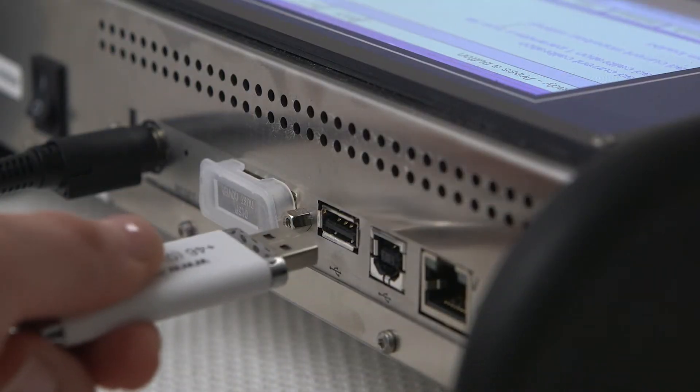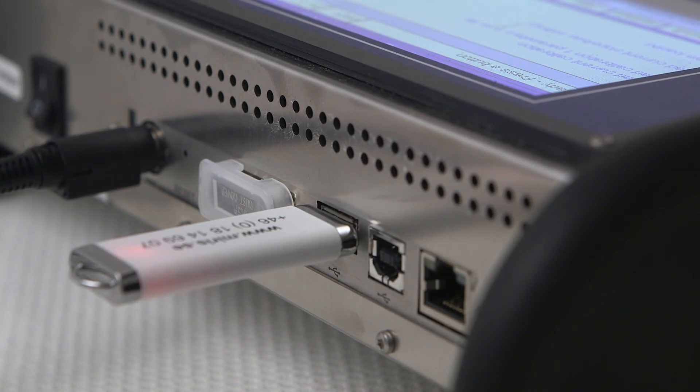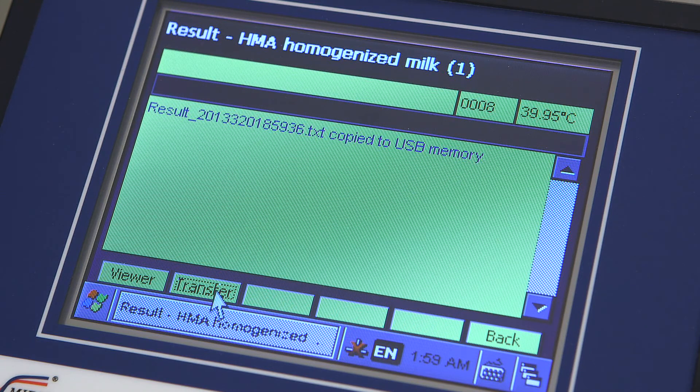Your results can be quickly transferred to a USB as a text file for presentation in a spreadsheet by pressing Result and then Transfer on the menu bar.